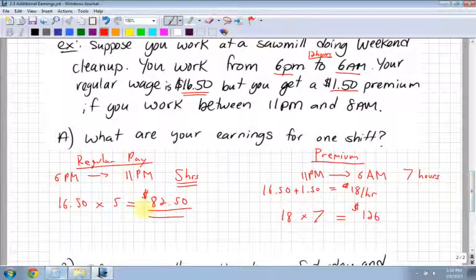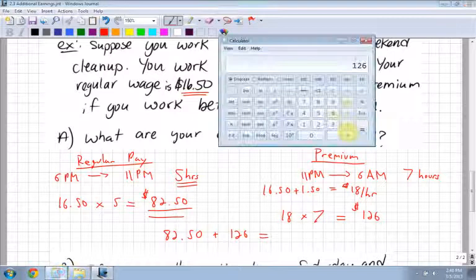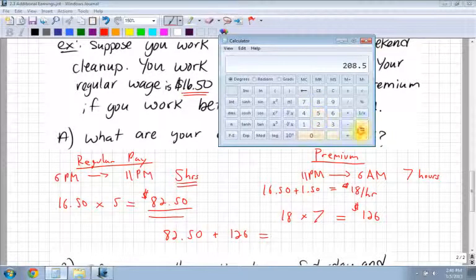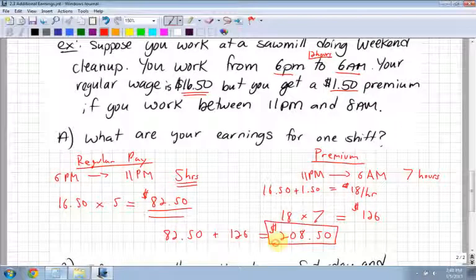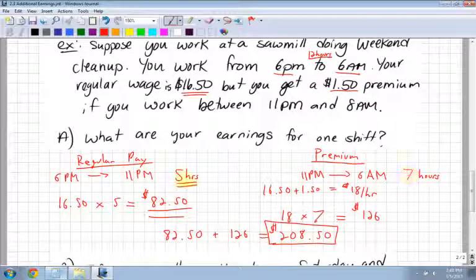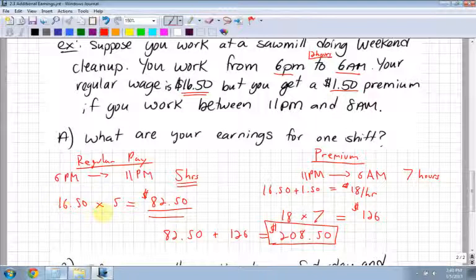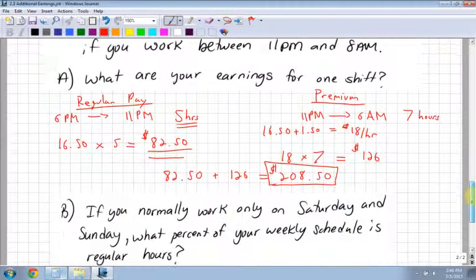You have your premium pay and your regular pay. Add these two together: $82.50 plus $126 equals $208.50. That would be for one shift because you're working 12 hours—5 plus 7 is 12. You're working 5 hours at your regular pay of $16.50, and 7 hours at your premium pay. That's why people want night shifts sometimes—if they can do it, they can usually make a little bit more.